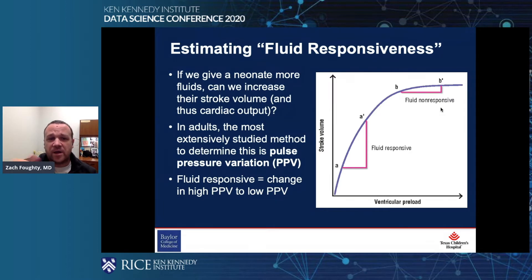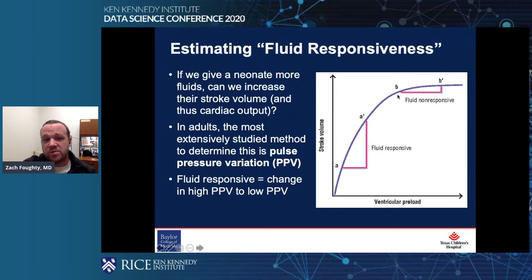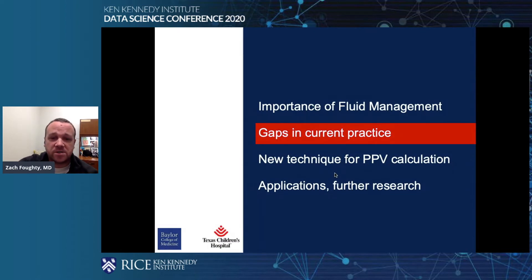The questions we want to know are: if we give a neonate fluids, can we actually increase their stroke volume and cardiac output? In adults, one of the most highly studied measures of this is called pulse pressure variation. People down at point A have high pulse pressure variation and are lower on the Starling curve, while people at point B have low pulse pressure variation.